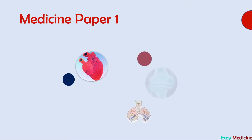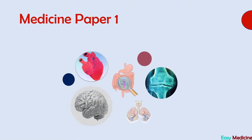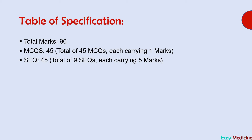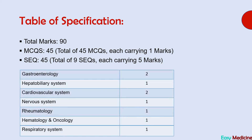Hello doctors, welcome to Easy Medicine. Today we will discuss Medicine 1 past papers of final year MBBS. I have provided you with the distribution of marks for Medicine Paper 1. In this video we will discuss rheumatology — you will have one question from this topic. You will see a blue box in the right corner with every answer, as all answers are taken from a UHS recommended book.